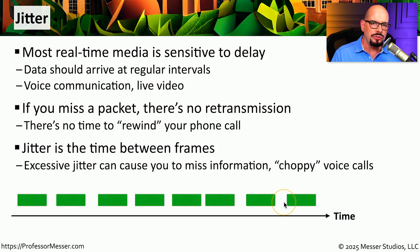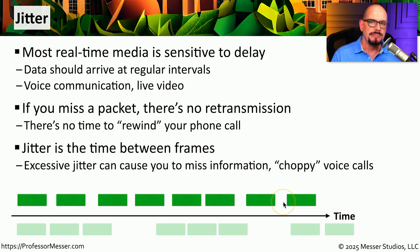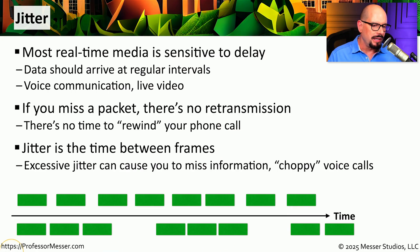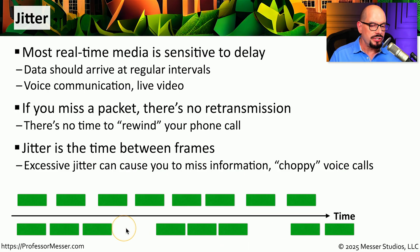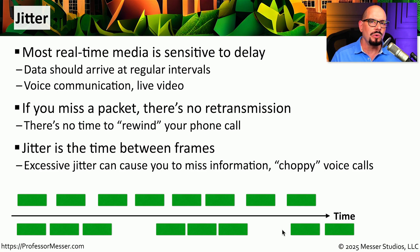If there's network congestion or errors, you may find it is not a consistent amount of data being received. You might see a group of data, then a longer gap, then another grouping of data, then a longer gap, and so on. In this case, there's a significant amount of jitter between these frames, and it will probably cause your video to freeze or your phone call to be very choppy.